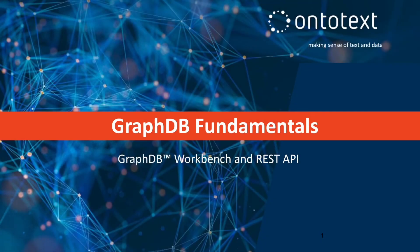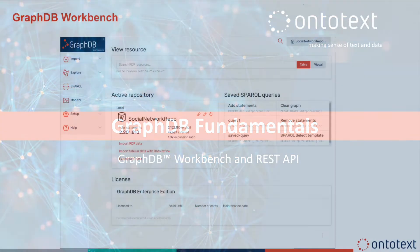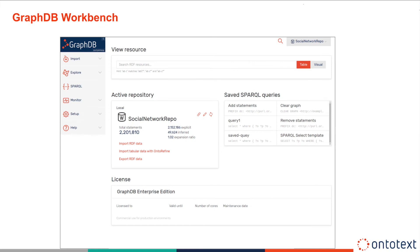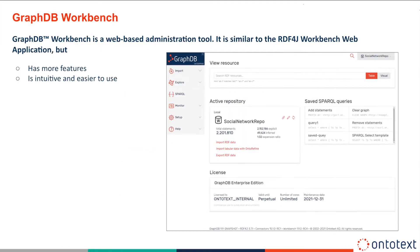In this video, we will give a brief overview of GraphDB Workbench and REST API. The GraphDB Workbench is an administration web-based interface for the database, allowing all sorts of administrative operations to be performed over it. It is similar to the RDF4J Workbench web application, but is much easier and more intuitive to use and offers more functionality. The Workbench is a standalone application that can be run and connected with the database by just providing a configuration parameter when it is started.